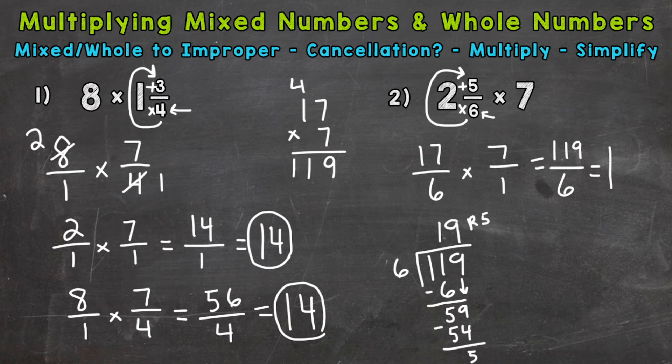So our whole number is going to be 19. Our remainder of 5 is going to be the numerator of the fractional part. And we keep our denominator of 6 the same. So we get 19 and 5 sixths. Now we do need to look to see if we can simplify any further. But 5 sixths is in simplest form. So we are done. Our final answer is 19 and 5 sixths.